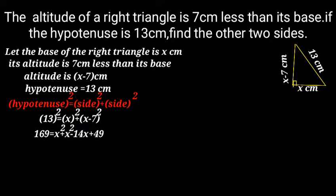169 equals x squared plus x minus 7 whole squared equals x squared plus x squared minus 14x plus 49. That is equal to 2x squared minus 14x plus 49 equals 169.